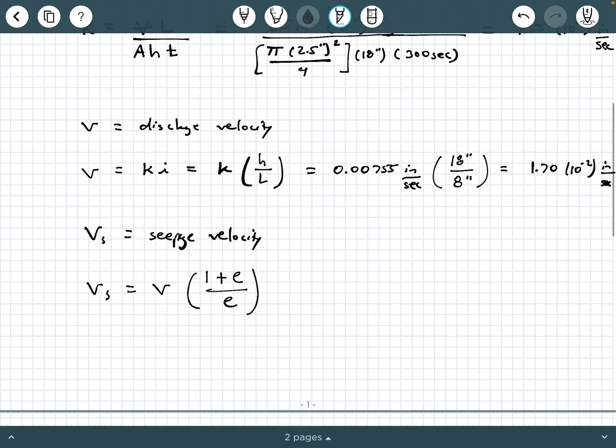So we can substitute appropriate values in here, and we're going to get 4.48 times 10 to the minus 2 inches per second. So those are our three values.